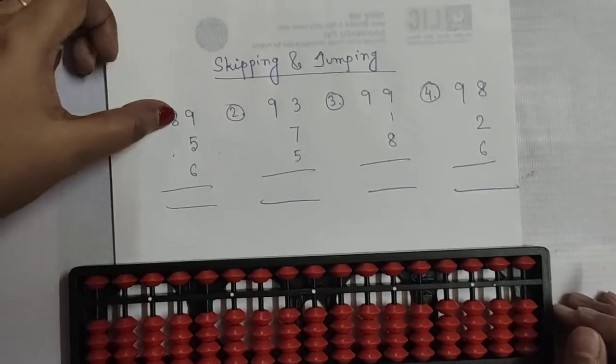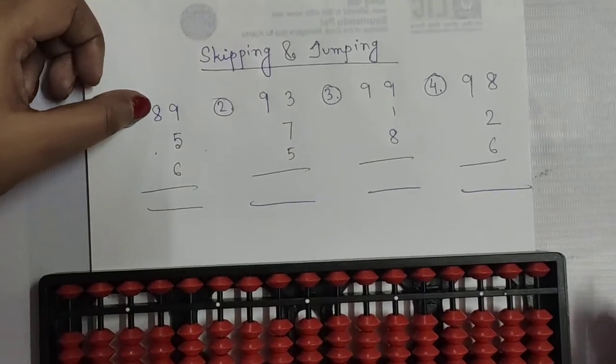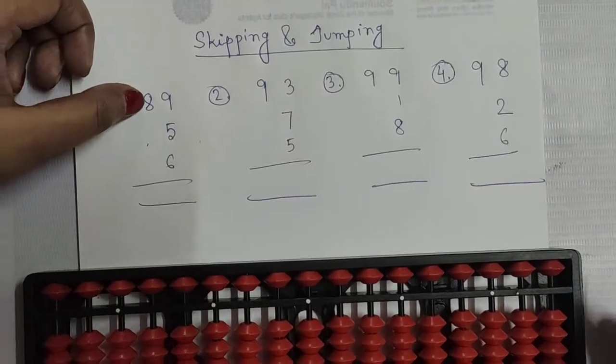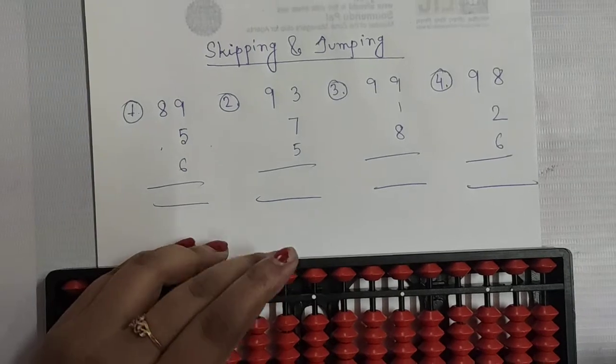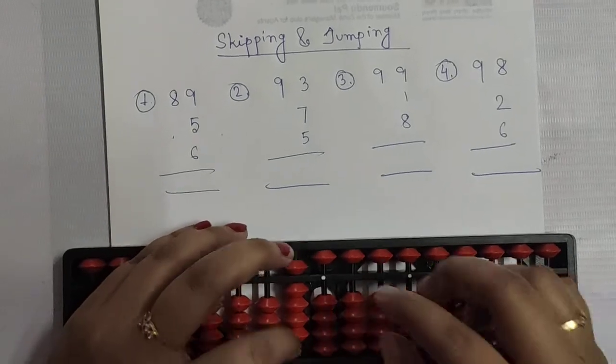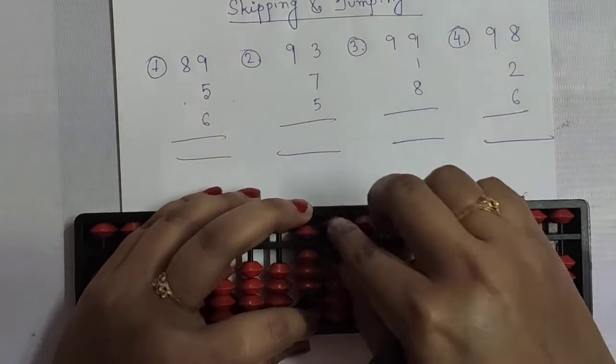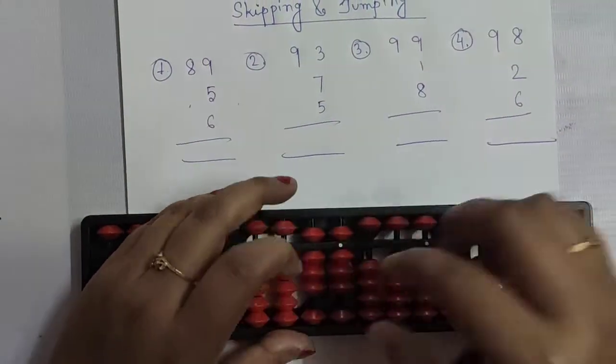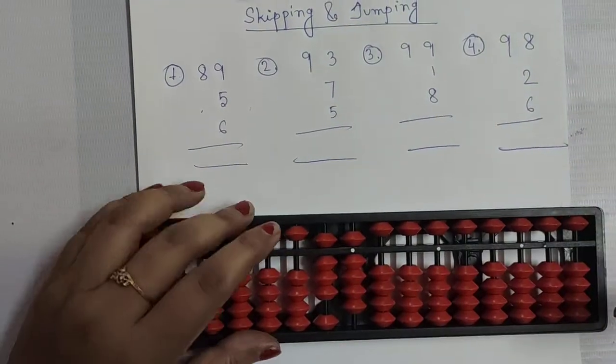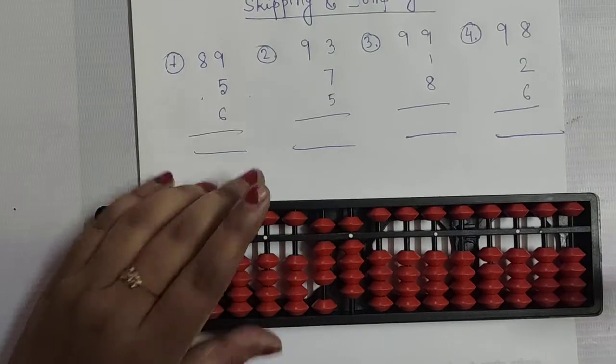So first sum is here: 89. Add 80, add 9. So 89 is done.